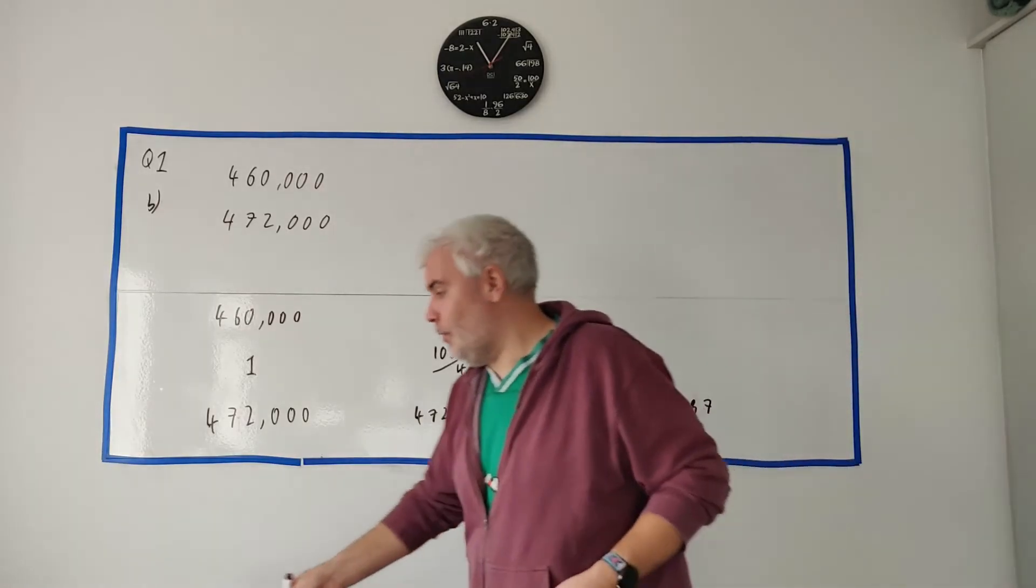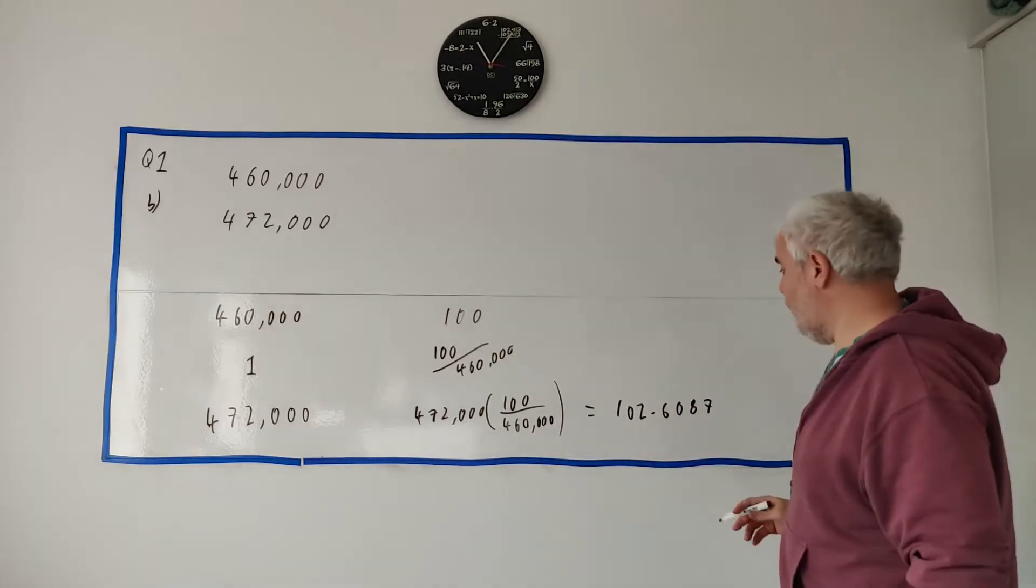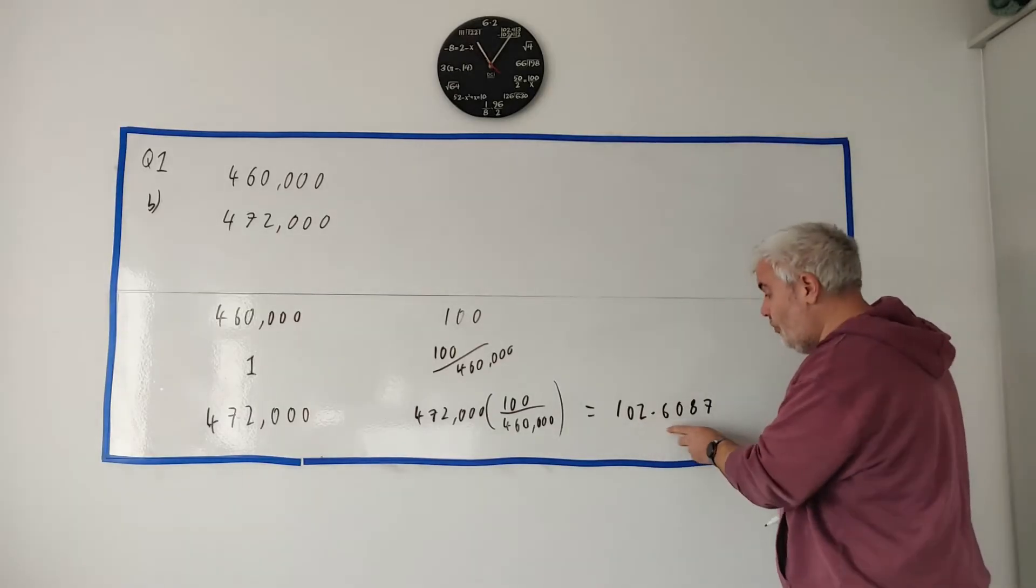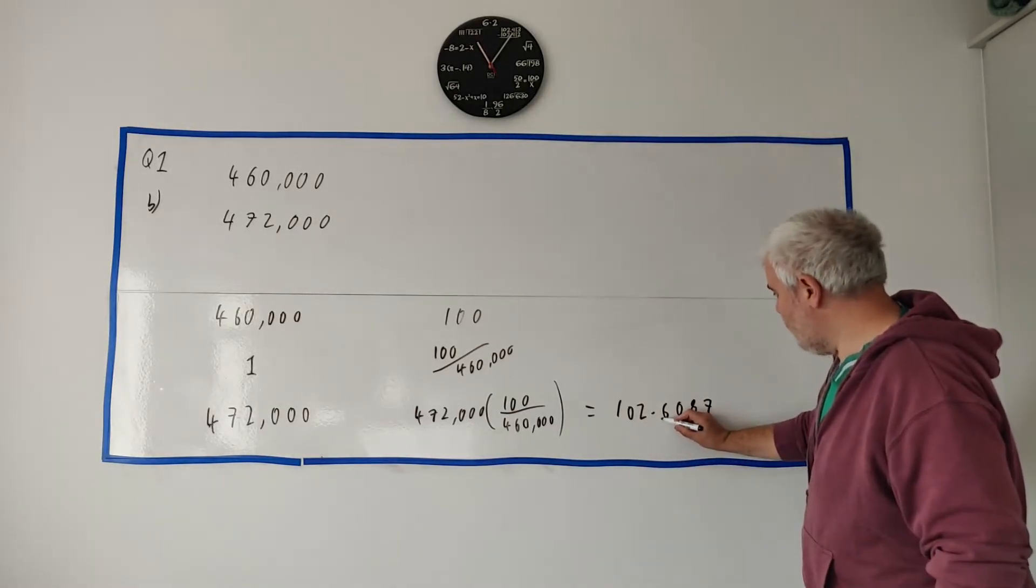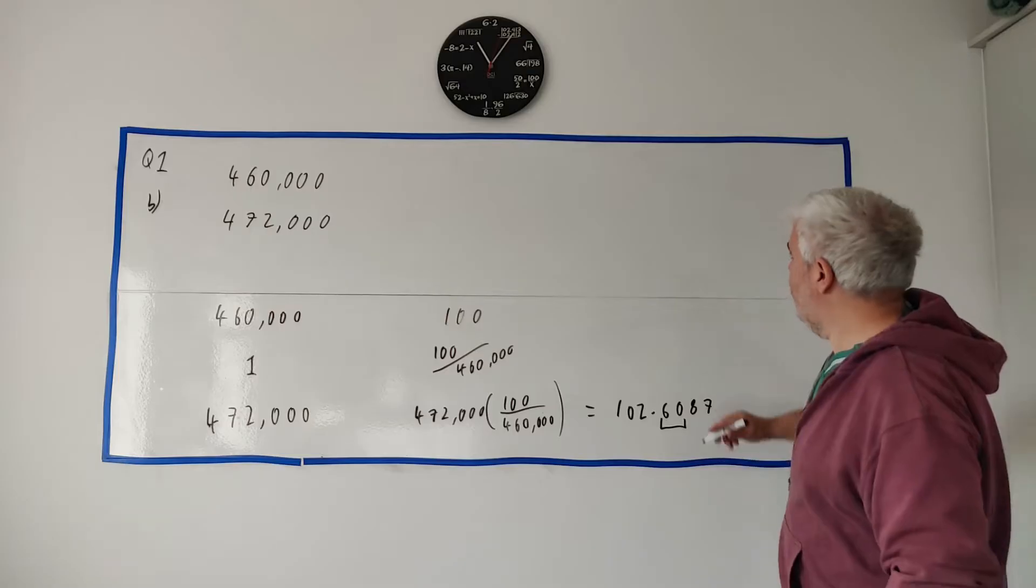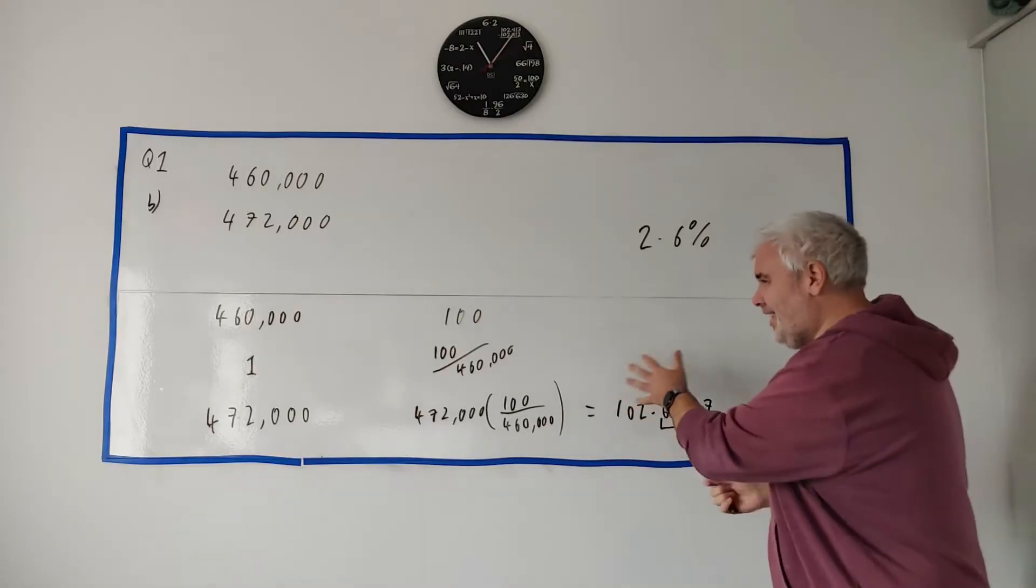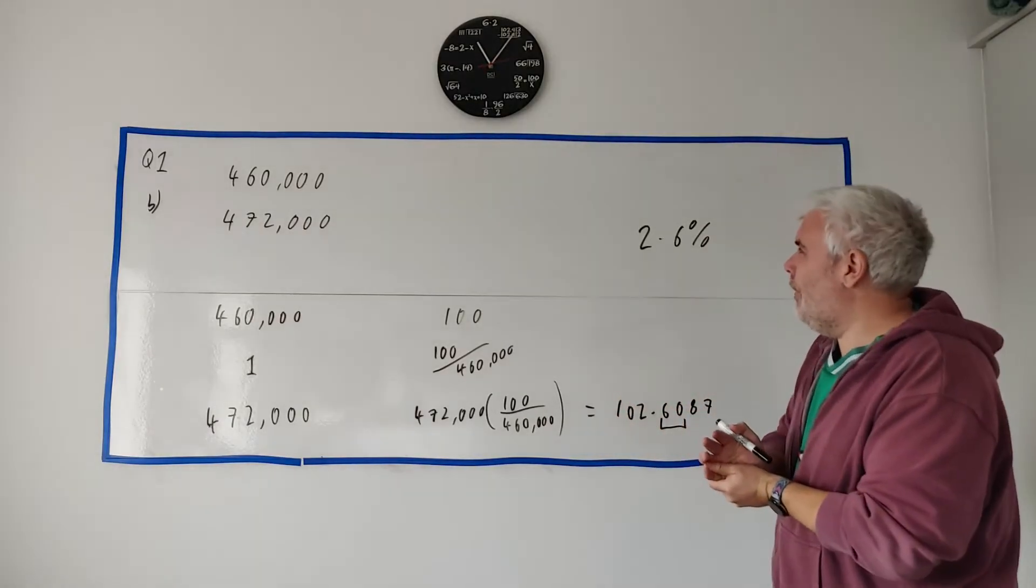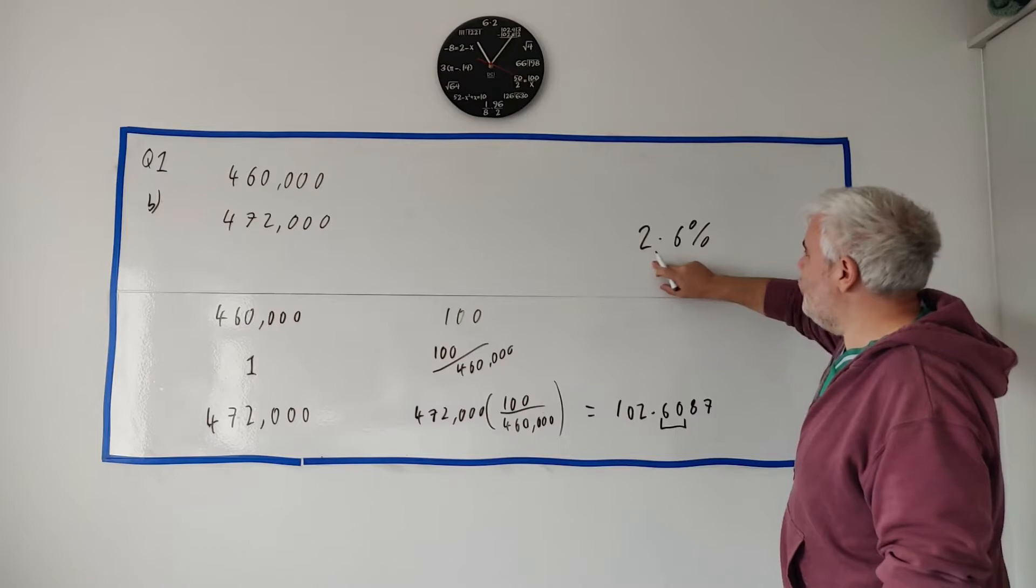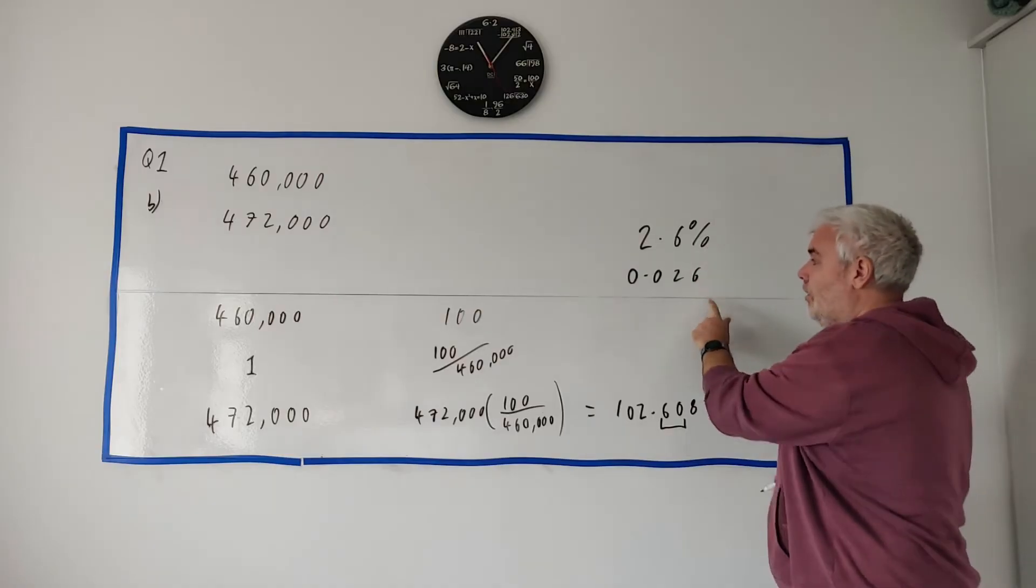Now the question asked to 1 decimal place. So it's a little tricky here because we have to know how to read this. 102% - that's not right. It increased 100 went to 102. It increased 2% or 2 point something here. So 1 decimal place would be these two numbers here. 60 is closer to 6 than it is to 7. So the answer we're looking for is 2.6%.